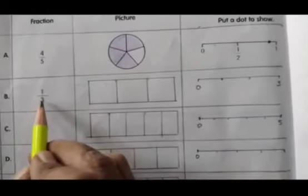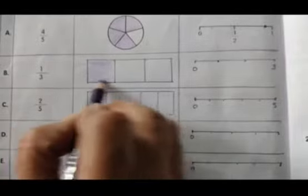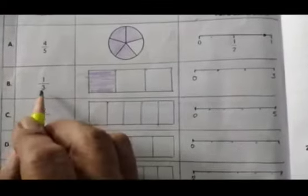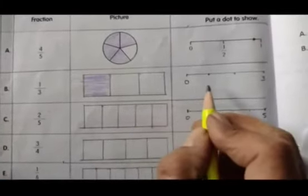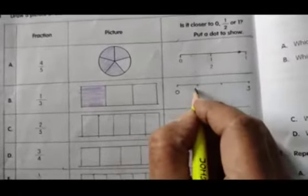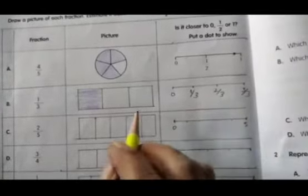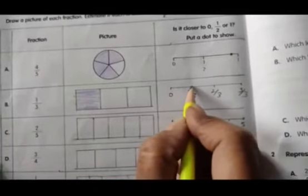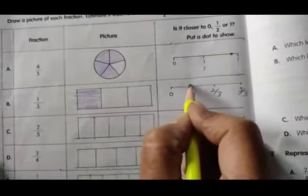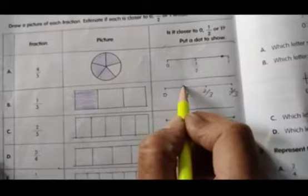Next B bit, 1 by 3. This is 1 whole, 3 parts, so 1 part I will shade children. Now tell me, it is closer to 0, half, or 1. This is 1 number line. I will write 1 by 3, 2 by 3, 3 by 3. 3 by 3 means 1 whole it is. So 1 by 3, here it is. We will mark here children, 1 by 3. So it is closer to 0, or half, or 1? It is closer to 0.